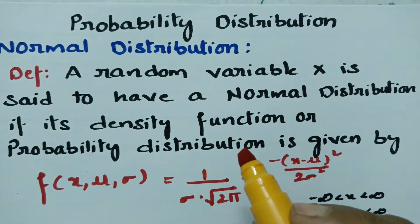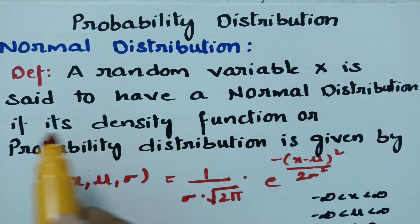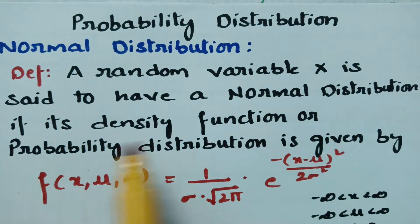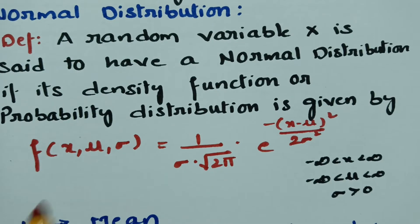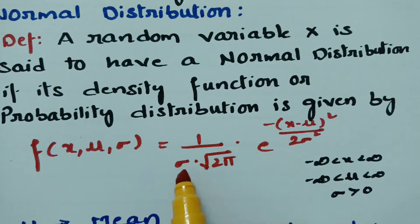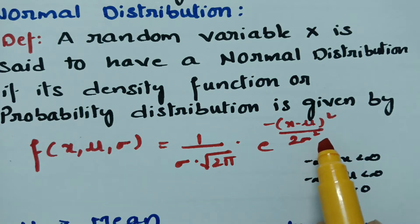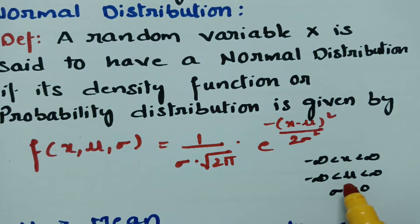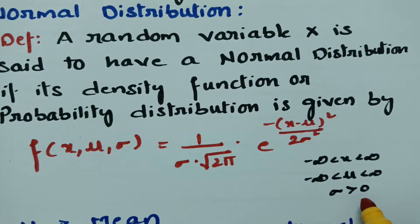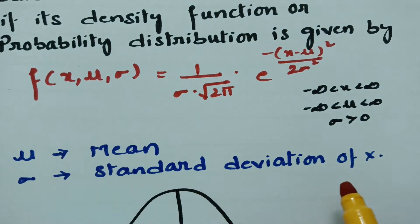The definition: a random variable x is said to have a normal distribution if its density function or probability distribution is given by the formula f(x, μ, σ) = (1 / (σ √(2π))) · e^(−(x−μ)² / (2σ²)), where x lies between −∞ to +∞, μ (the mean) also lies between −∞ to +∞, and σ (the standard deviation) is always a positive quantity.